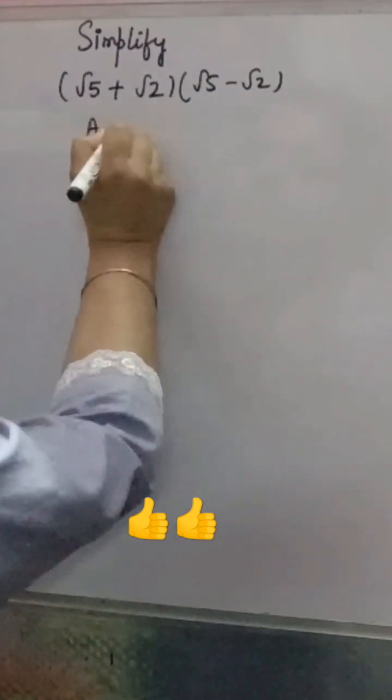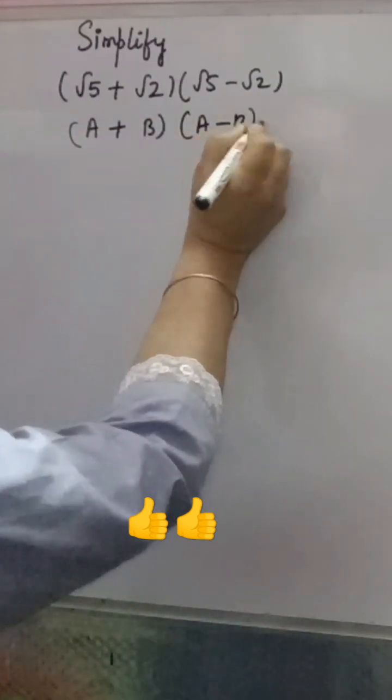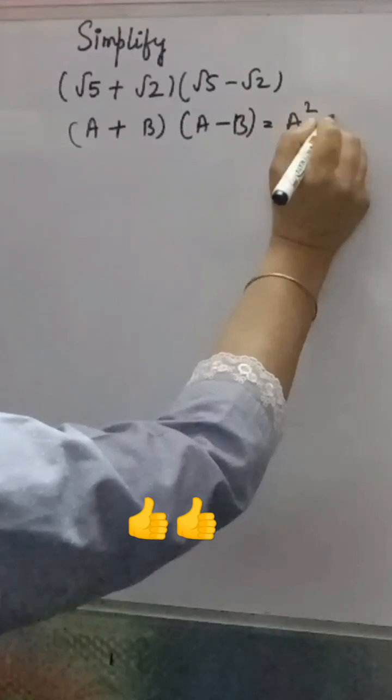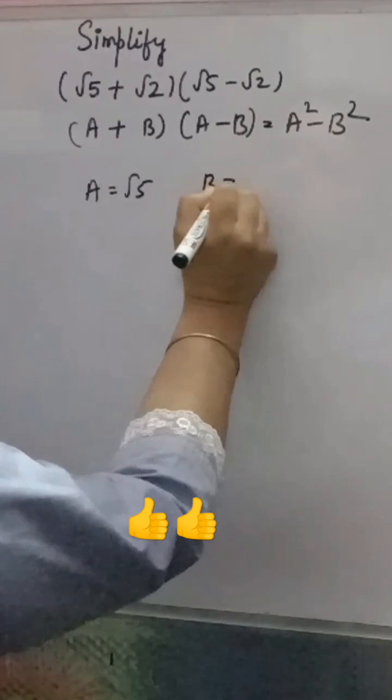You will compare it with the equation A plus B into A minus B, that is equal to A square minus B square. Now what is A? A is root 5, B is root 2.